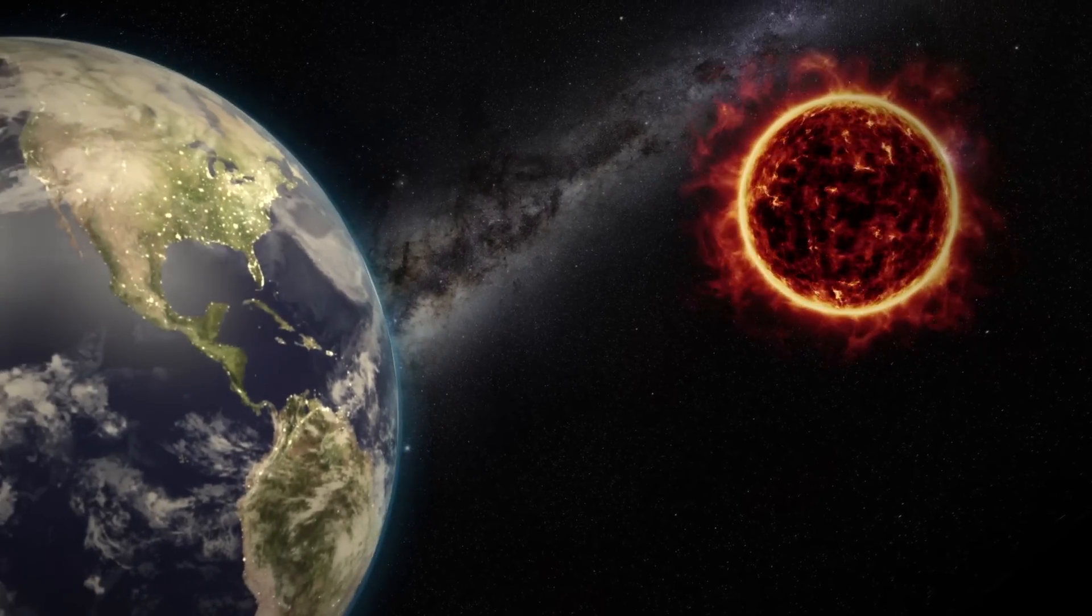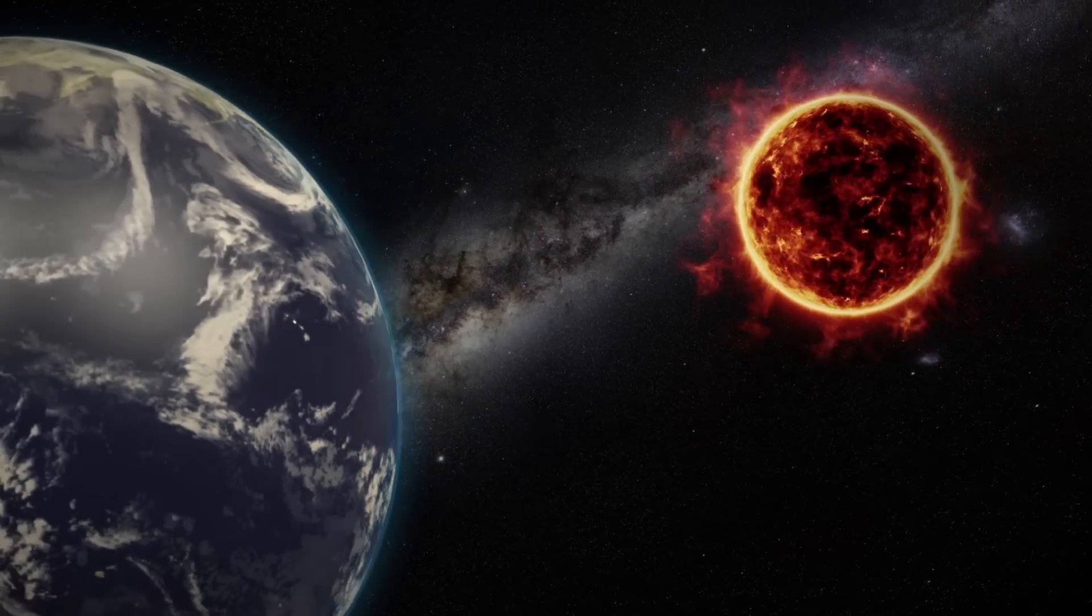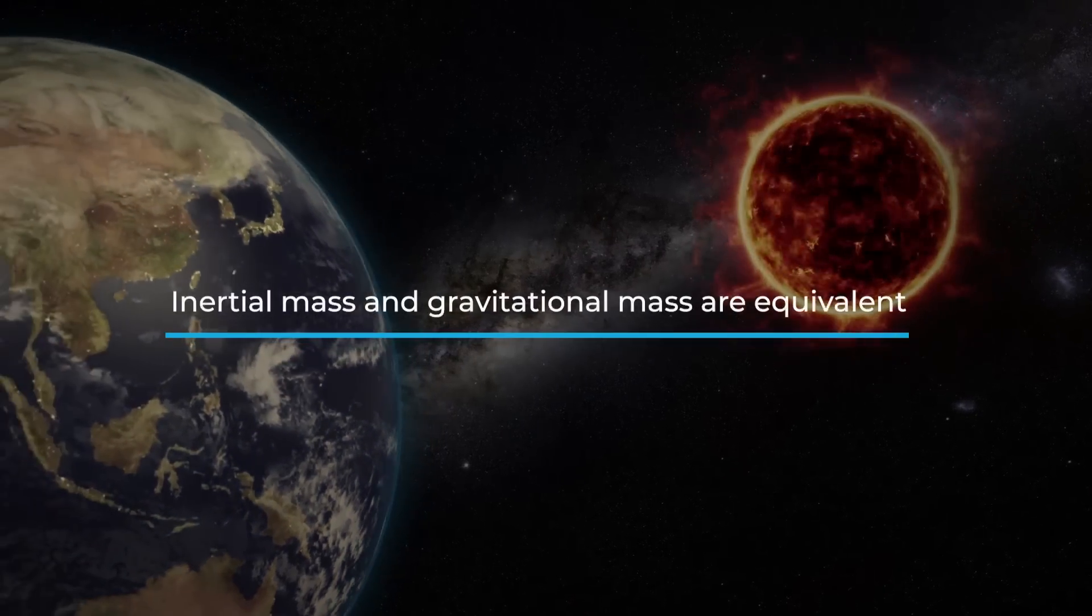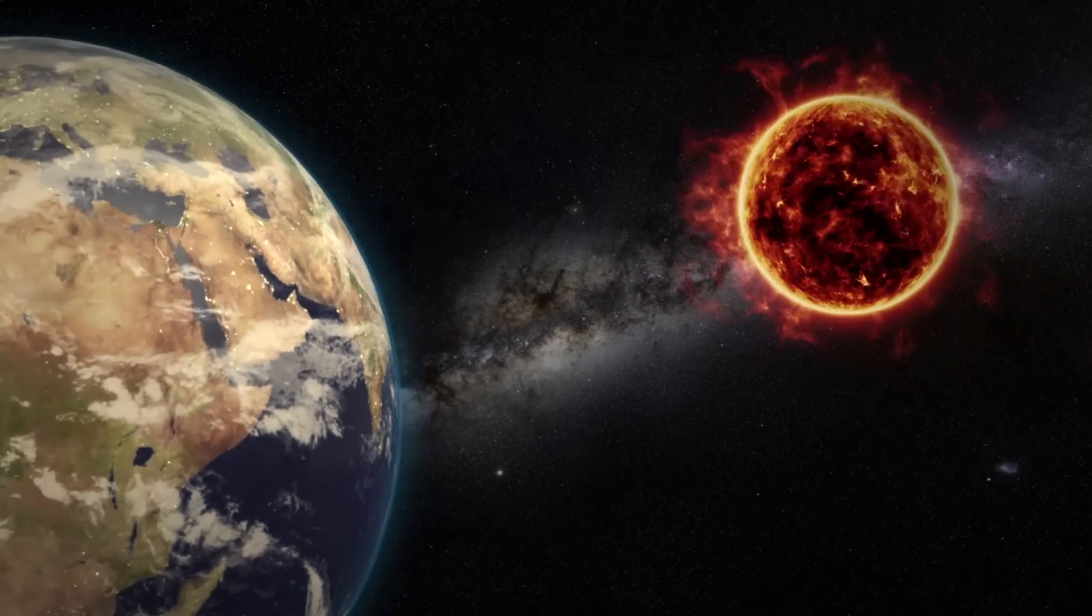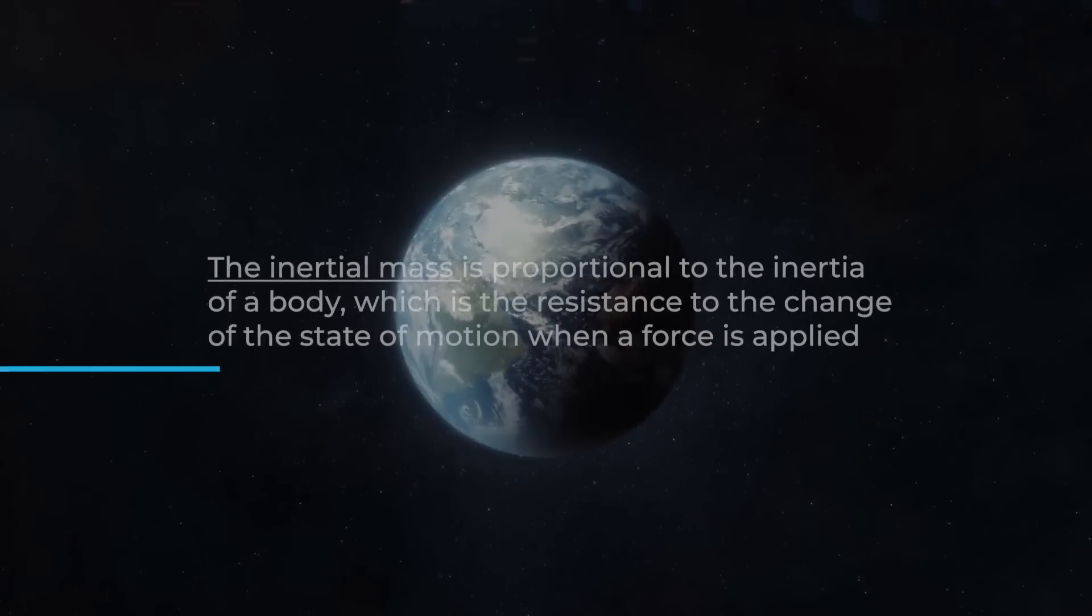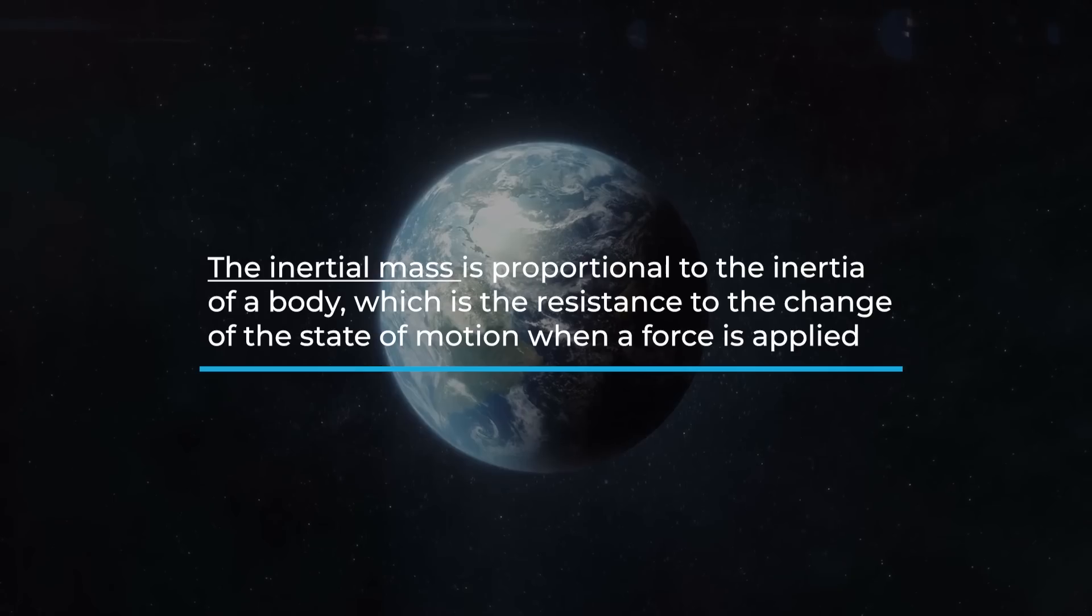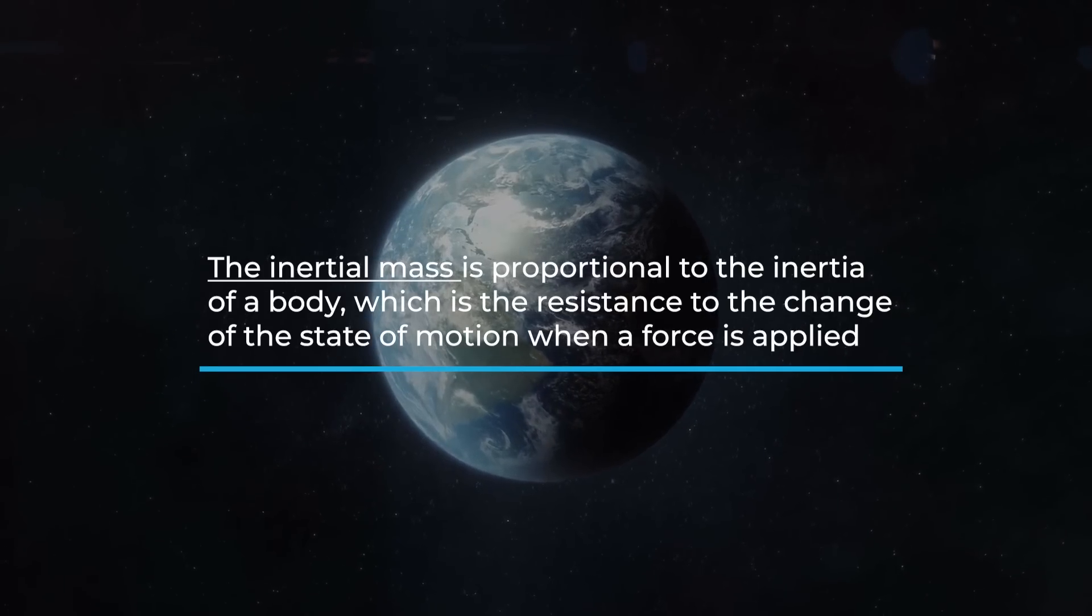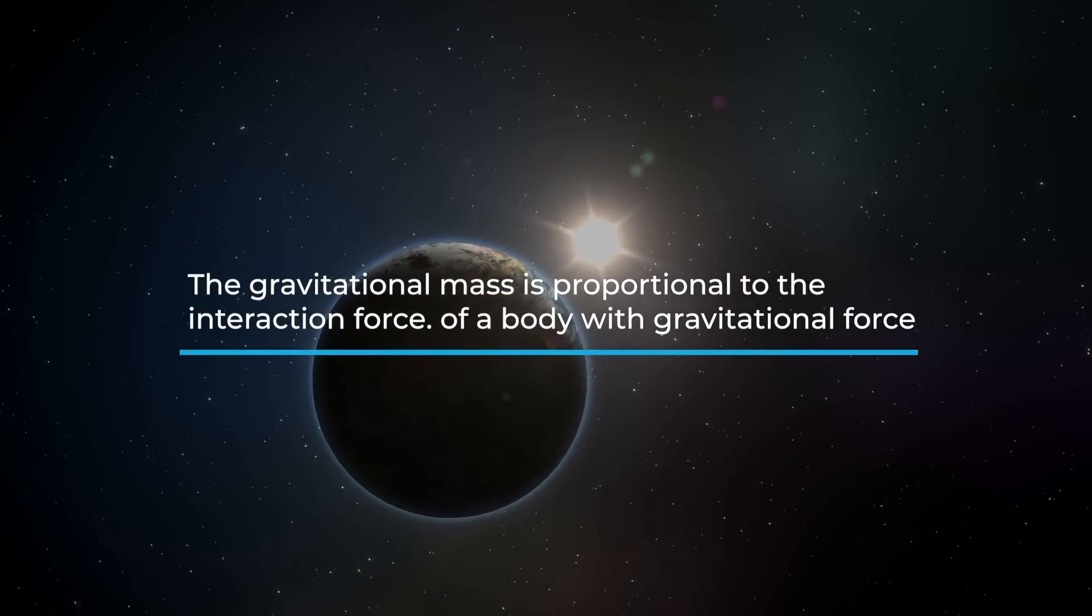The equation underlying general relativity, also called Einstein's field equation, is based on the equivalence principle, which establishes that inertial mass and gravitational mass are equivalent. However, the respective definitions of those two types of masses are different. The inertial mass is proportional to the inertia of a body, which is the resistance to the change in the state of motion when a force is applied.